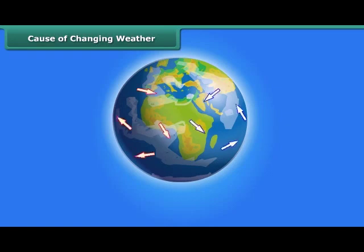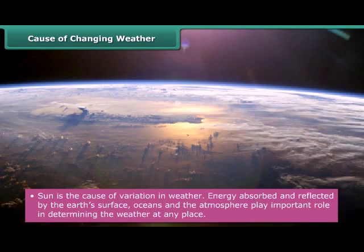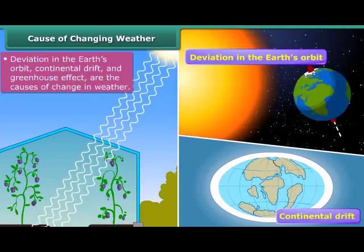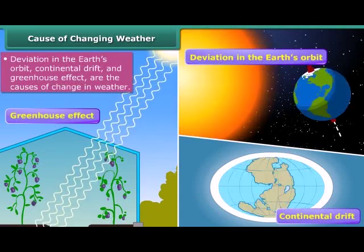The weather is such a complex phenomenon that it can vary over very short periods of time. The sun causes all changes in the weather. Energy absorbed and reflected by the earth's surface, oceans, and the atmosphere play important roles in determining the weather at any place. Also, deviation in the earth's orbit, continental drift, and the greenhouse effect are additional causes of the changes in weather.